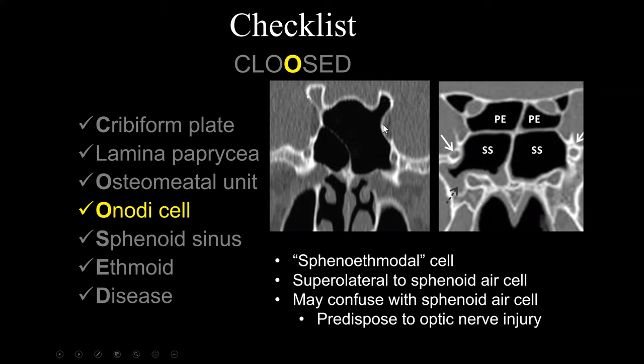During endoscopic sinus surgery, it's important to make surgeons aware of sphenoethmoidal air cells — otherwise known as onodi air cells — because a surgeon may confuse the sphenoid air cells with the onodi air cells, predisposing these patients to optic nerve injuries. Here is another example of a patient with sphenoethmoidal air cells where, looking superiorly, there is a completely opacified onodi air cell. The surgeon coming through the sphenoethmoidal recess may think this is the roof of the sphenoid sinus when in fact it is an opacified onodi air cell.